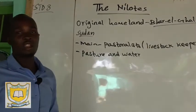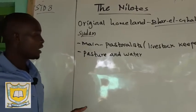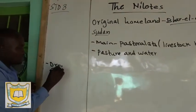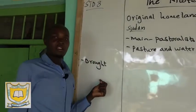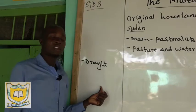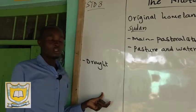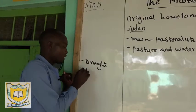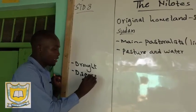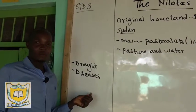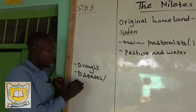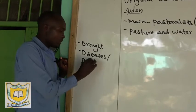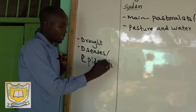These are the key points you should understand. Other reasons for migration include drought — drought is a long period without rain, which meant there was not enough rainfall for grass to grow, so they had to move to look for grazing areas. There were also diseases, also called epidemics, which made these people migrate.